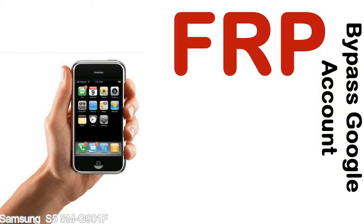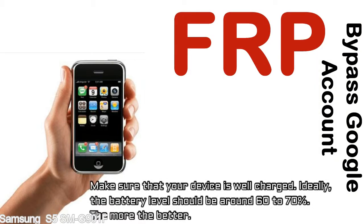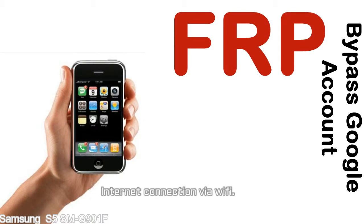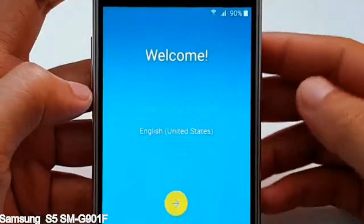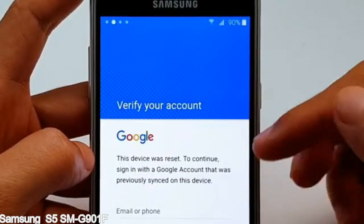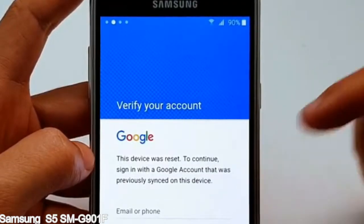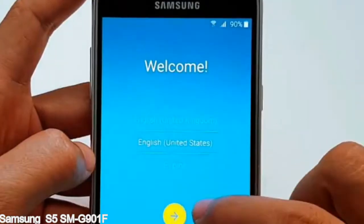Before starting: one, make sure that your device is well charged. Ideally, the battery level should be around 60 to 70 percent — the more the better. Two, internet connection via WiFi. Here is a step-by-step guide on how to bypass a Google account on your Samsung Galaxy device.